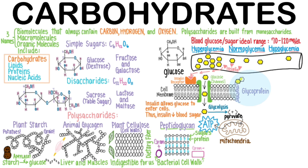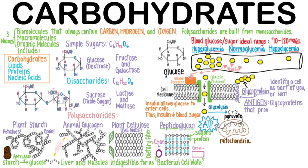Glycoproteins are really neat molecules that are part protein and part sugar. They serve to identify a cell as part of you or not — think of them as ID tags. An antigen is the name we give to glycoproteins that provoke an immune response. For example, the spike protein of SARS-CoV-2 is a glycoprotein.